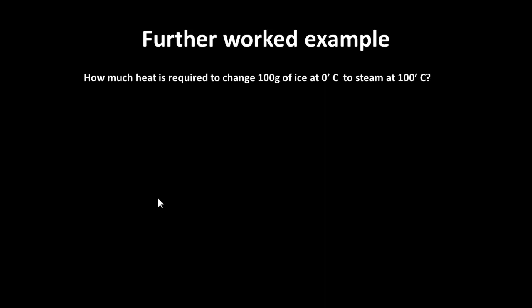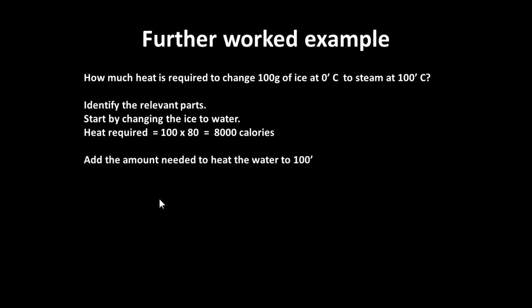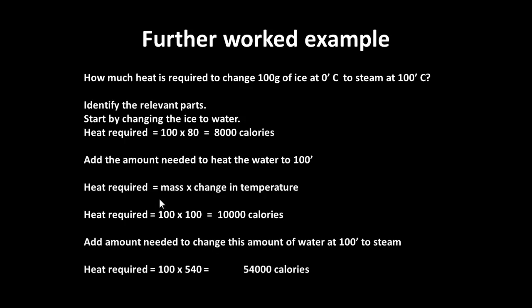Take one further example: How much heat do you need to change 100 grams of ice to 100 grams of steam? Note that you've got two phase changes here. First, you've got to change the ice to water. That's going to be 100 times 80, which is 8,000 calories. Then you've got the amount needed to heat the water to 100 degrees. That's the mass times the change in temperature, so 100 times 100 is 10,000. Then you've got the amount needed to change the 100 grams of water to steam, which will be 100 times 540. If we add all that together, we should be left with 72,000 calories required, or 72 kilocalories.